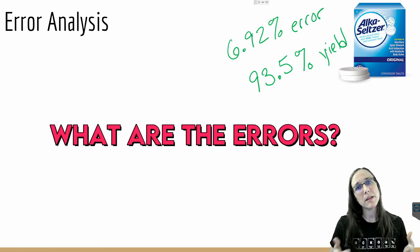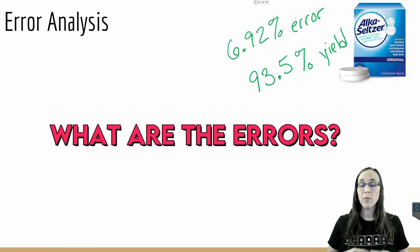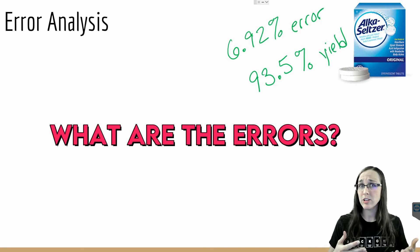So what are the errors that caused me to lose some percentage of my yield? One of those errors you might think could be that, okay, what if all of the baking soda didn't react with the HCl?